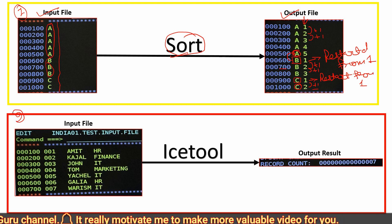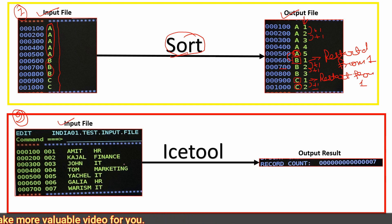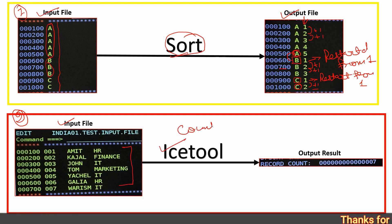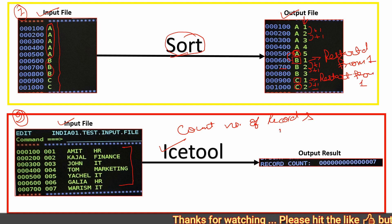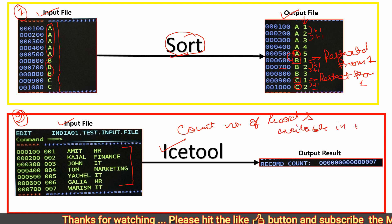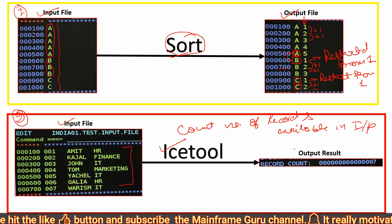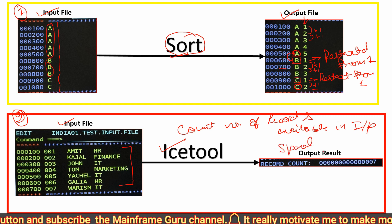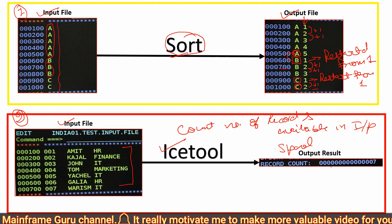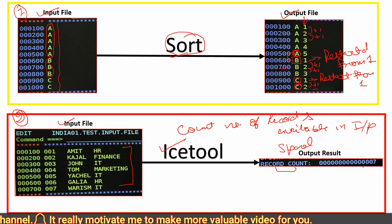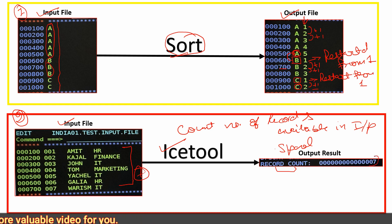For the second goal, we have one input file with seven records. Using the ICETOOL utility, we have to count the number of records available in the input file. Here you can see the output result — we have the record count and the total number of records is seven, so in the SPOOL we will get seven.